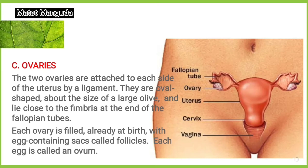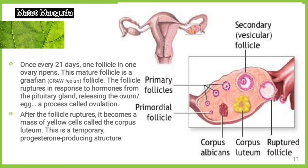Ovaries. The two ovaries are attached to each side of the uterus by a ligament. They are oval-shaped, about the size of a large olive, and lie close to the fimbria at the end of the fallopian tube. Each ovary is filled already at birth with egg-containing structures called follicles. Each egg is called an ovum. Once every 21 days, one follicle in one ovary ripens. This mature follicle is a Graafian follicle. The follicle ruptures in response to hormones from the pituitary gland, releasing the ovum — a process called ovulation. After the follicle ruptures, it becomes a mass of yellow cells called the corpus luteum. This is a temporary progesterone-producing structure.